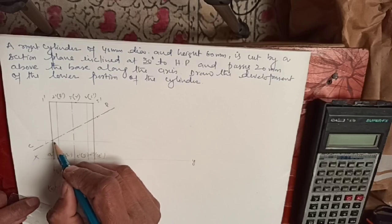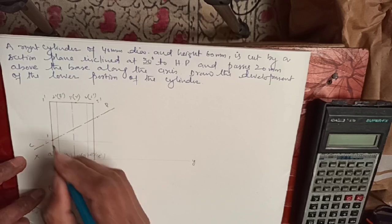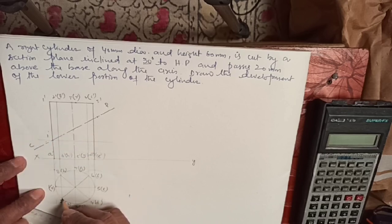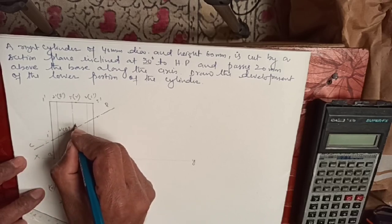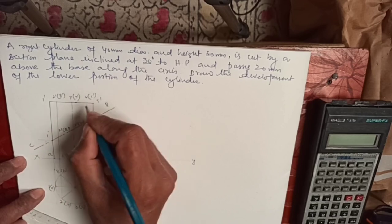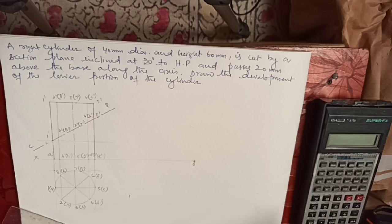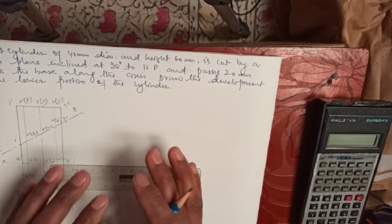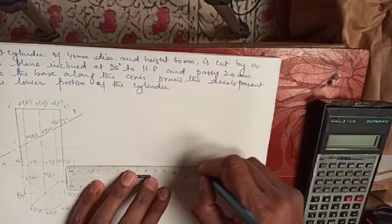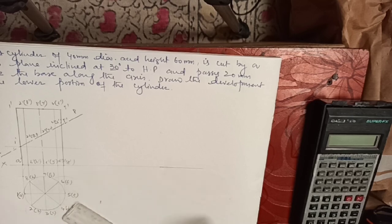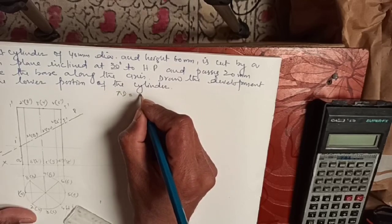Now we have to draw the section plane. The condition is that the section plane cuts at an angle of 30 degrees to the HP and passes 20 mm above the base. We measure 20 mm from the base — that gives us this point. We draw a line here, then measure the 30-degree angle and join those two points to show the cutting plane.